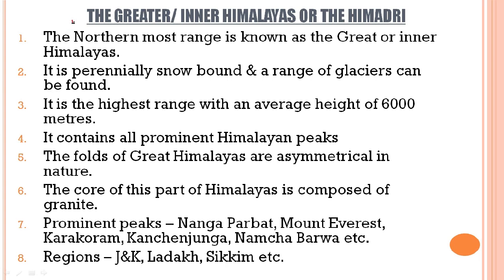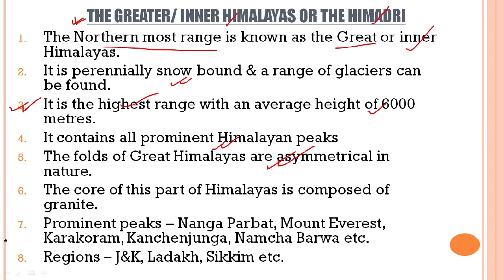Now we will start learning the first division of the Himalayan mountains — the Greater or Inner Himalayas, or the Himadri. This is the northernmost range, perennially snowbound, meaning covered with snow around the year, and a range of glaciers can be found in this belt. It is the highest range with an average height of 6000 meters and contains all prominent Himalayan peaks. The folds of the Great Himalayas are asymmetrical in nature — meaning the folds are not similar in size and shape — and the core of this part of the Himalayas is composed of granite.